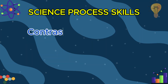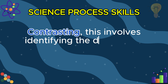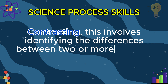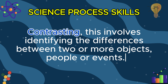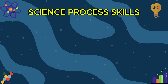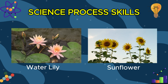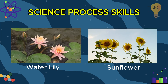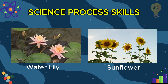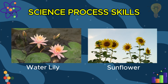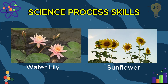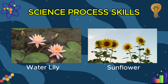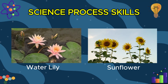Next is contrasting. This involves identifying the differences between two or more objects, people, or events. For instance, when contrasting the same two plants, you might notice that one needs more water while the other thrives in dry soil. Contrasting helps scientists understand the unique features that distinguish one thing from another.